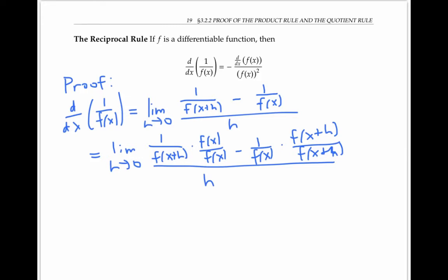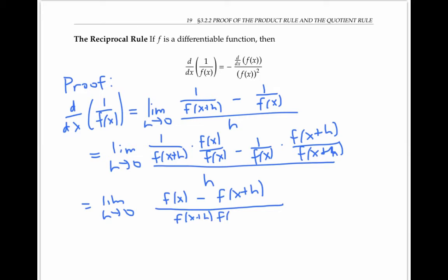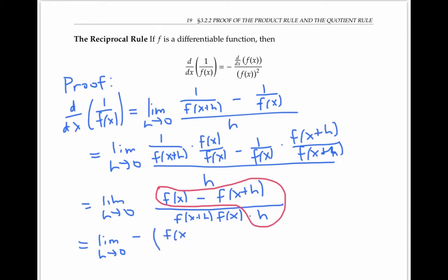I've just multiplied the first fraction by f(x)/f(x), and the second fraction by f(x+h)/f(x+h), in order to rewrite with a common denominator. So that gives me f(x) minus f(x+h) divided by f(x+h)·f(x). And instead of dividing this whole thing by h, I'll multiply it by 1/h, which gives me another factor of h in the denominator. Now, this expression is looking a lot like the derivative of f — it's just in the reverse order. So let me factor out a negative sign in order to switch that order, so this becomes [f(x+h) minus f(x)] over h, times 1 over [f(x+h)·f(x)].